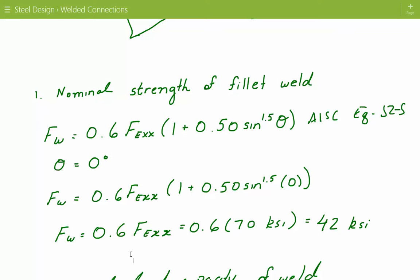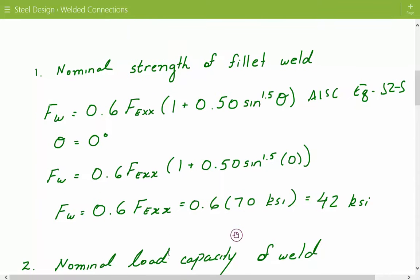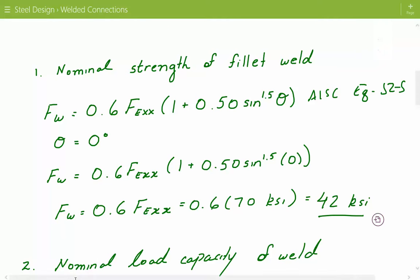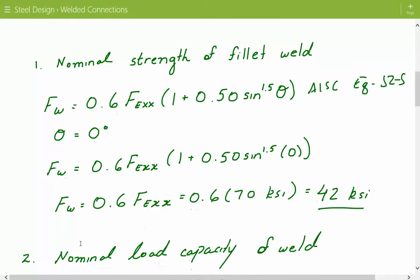FEXX represents the ultimate tensile strength of the electrode. So 0.6 times 70 KSI equals 42 KSI — that is the nominal strength of the fillet weld.